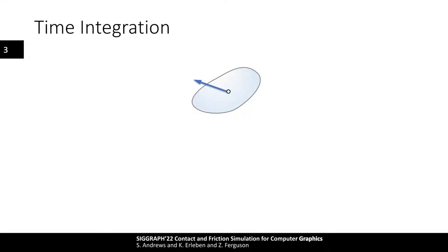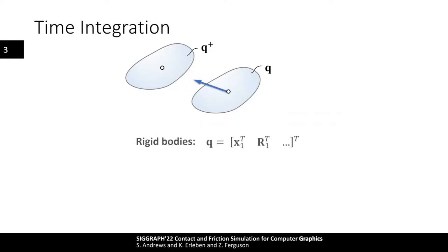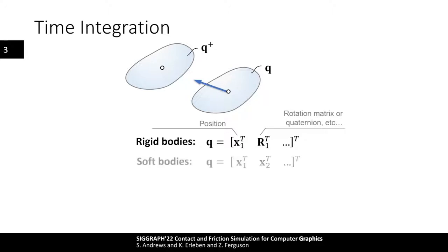Once the velocities have been computed, we can use an Euler integration scheme to advance the generalized positions q and compute their value at the end of the time step q-plus. For rigid bodies, q is a state vector that includes both linear positions and orientations; orientations are the tricky part since several representations can be used, with rotation matrices and quaternions being common in graphics. Whereas for soft bodies where mesh representations are common, the q vector contains the vertex positions of the mesh.